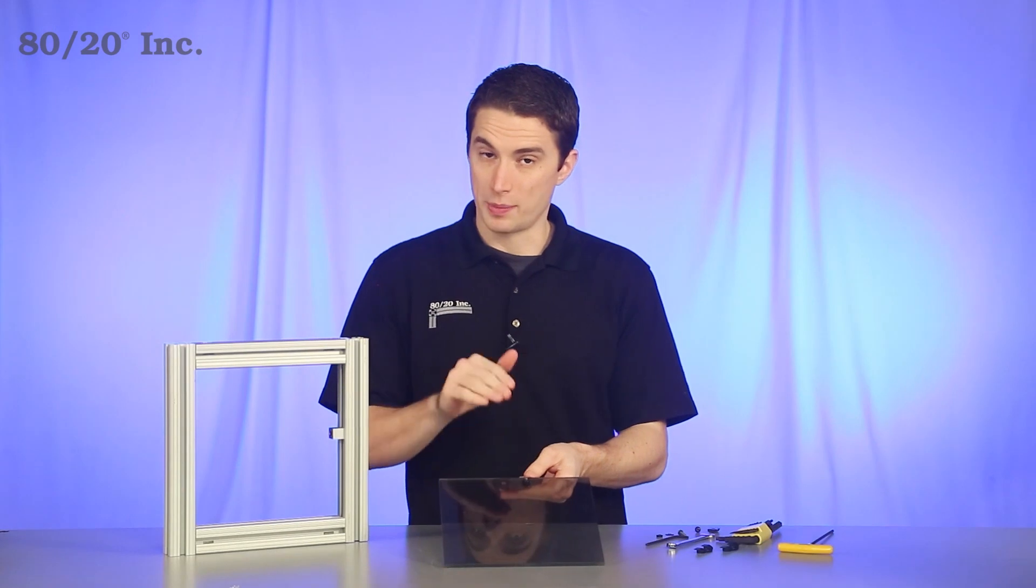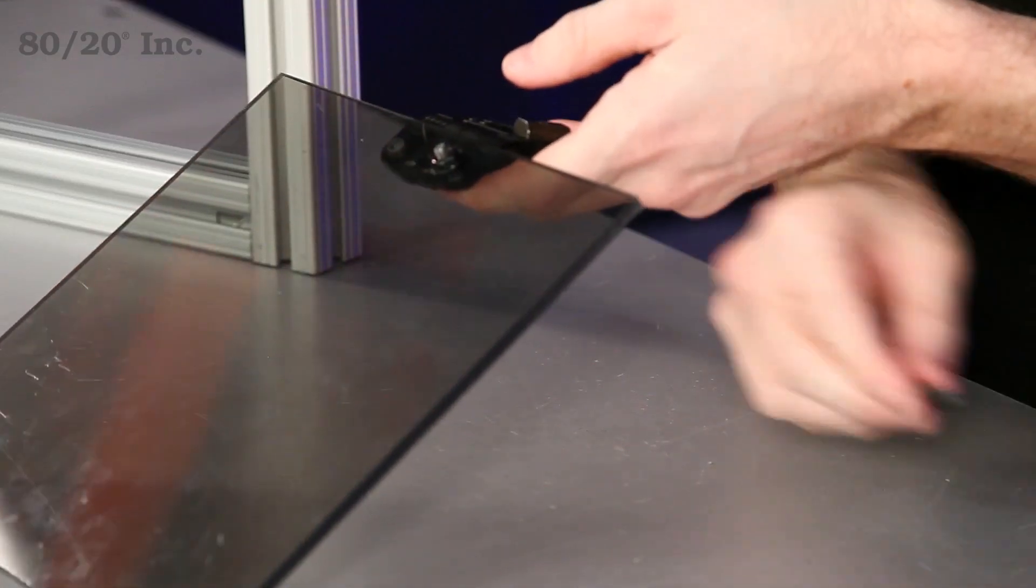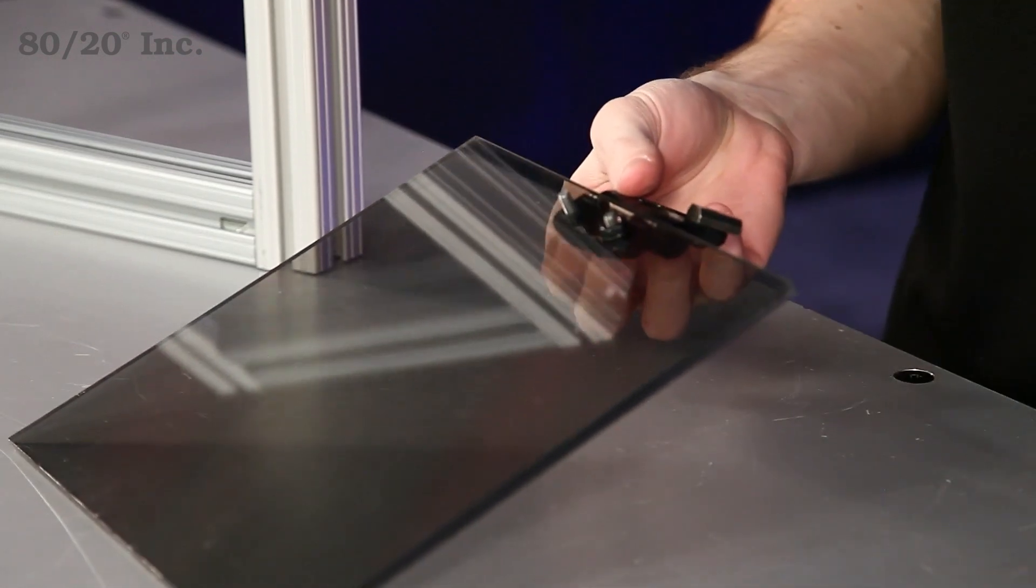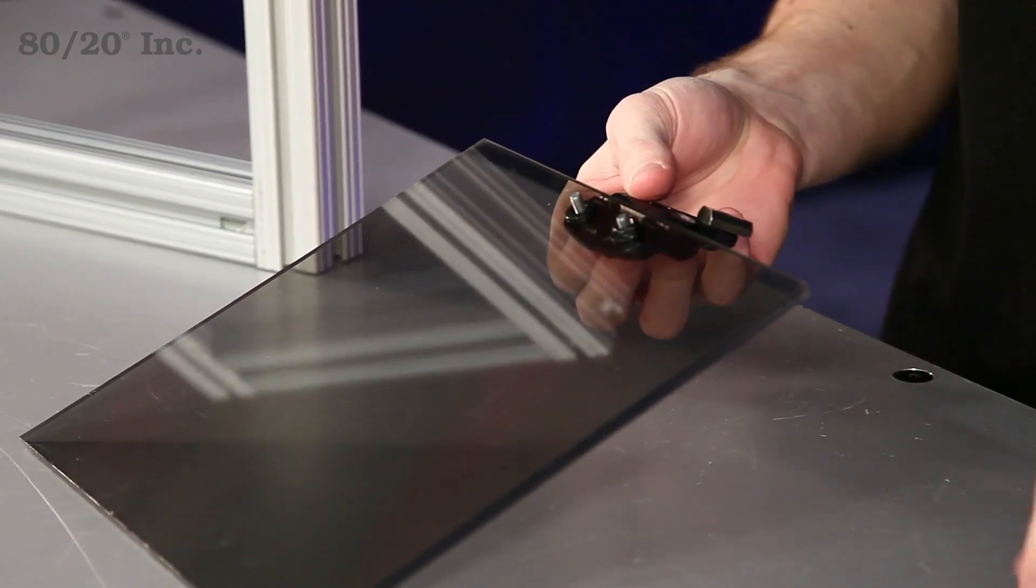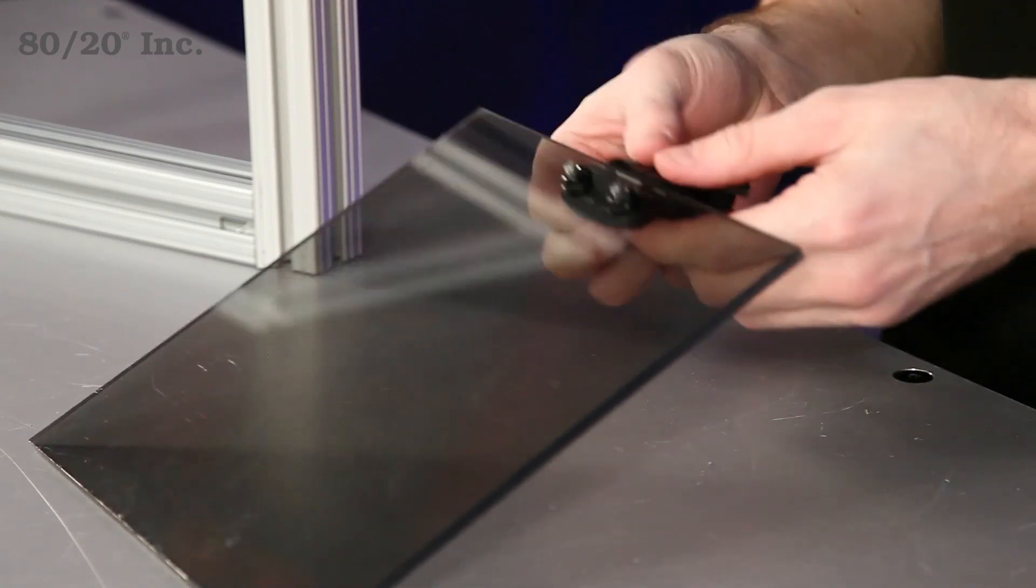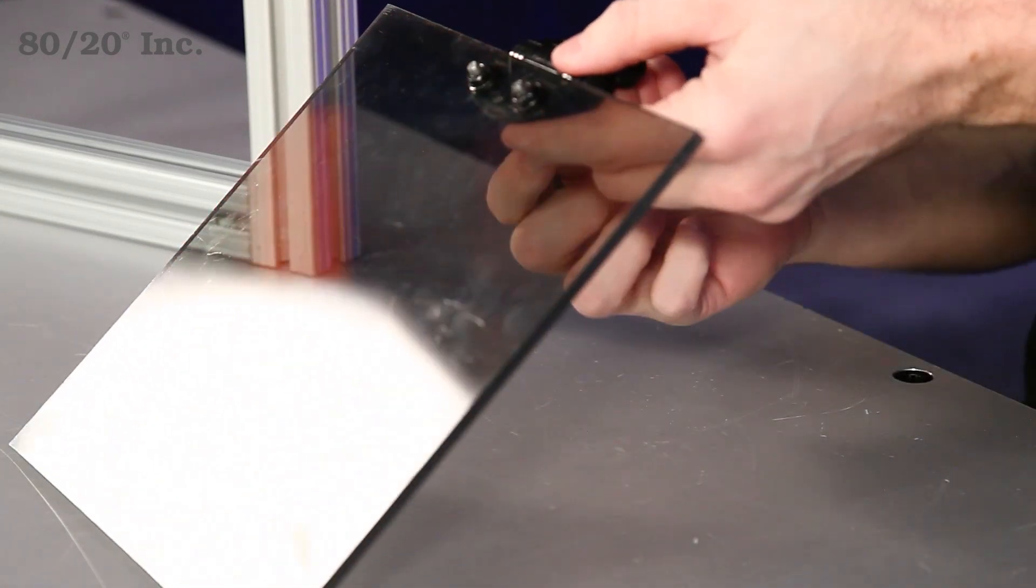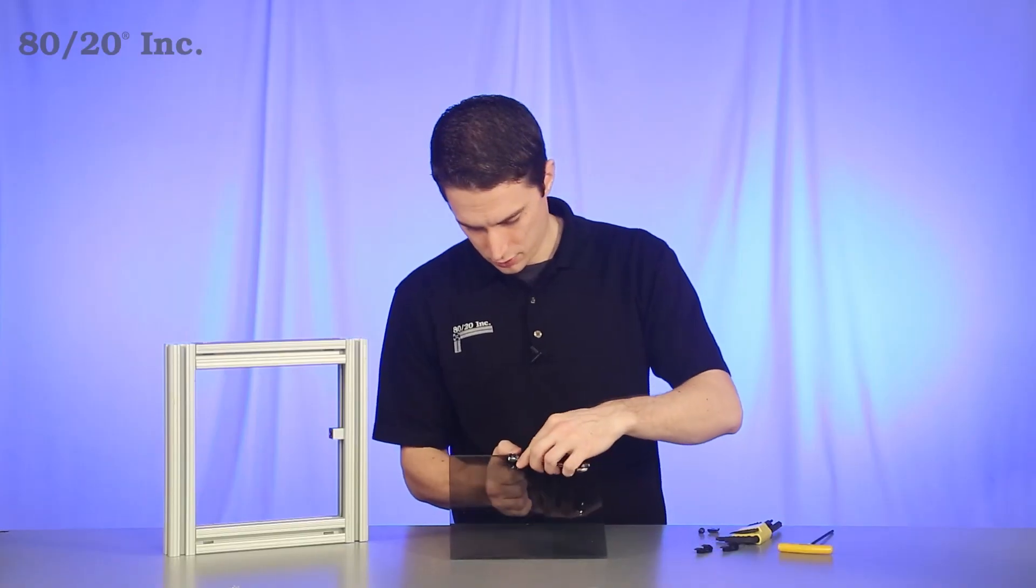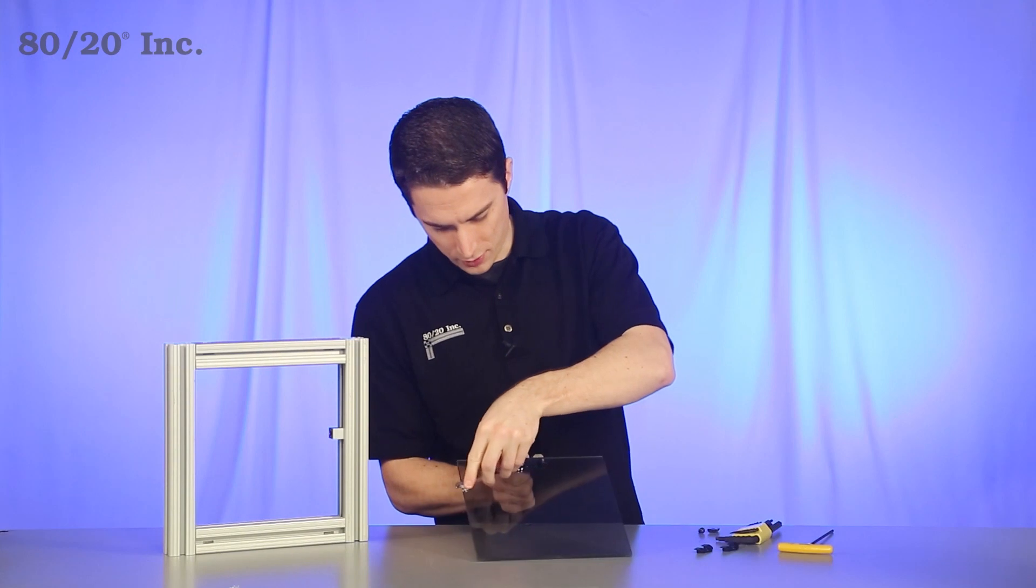Now we're going to work on putting our hinge on the panel itself. We've got one bolt in there, so we'll take one more bolt and finish it off. Grab our washer and our hex nut, we'll hand tighten all that down. Grab our wrenches, and we'll tighten that the rest of the way down.